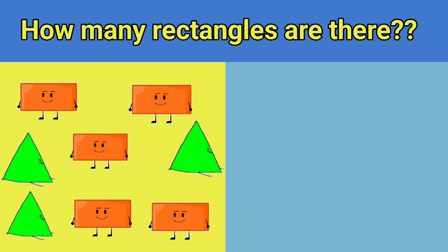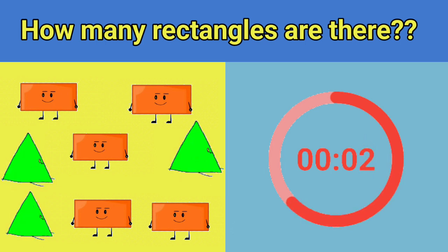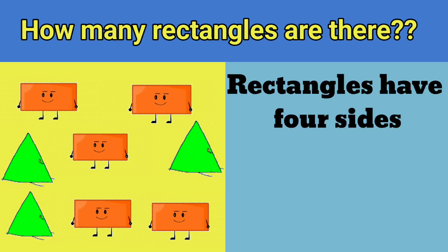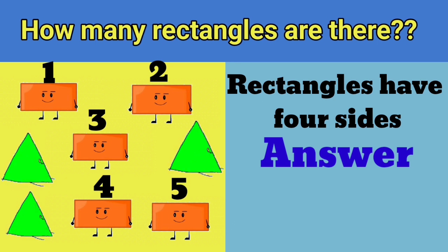How many rectangles are there? Rectangles have four sides. Let's count: 1, 2, 3, 4, 5. There are five rectangles.